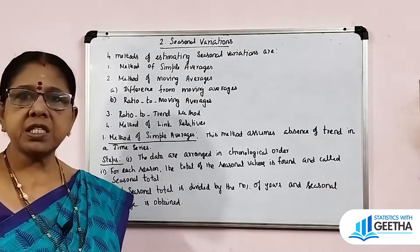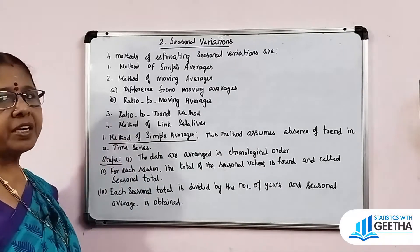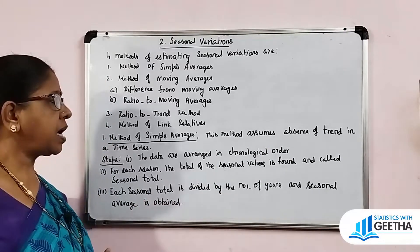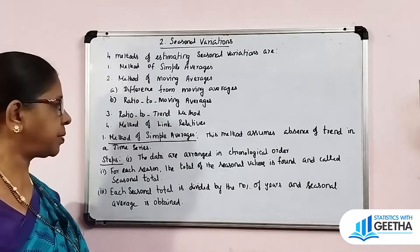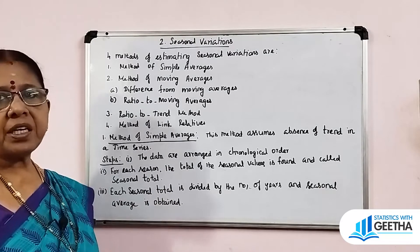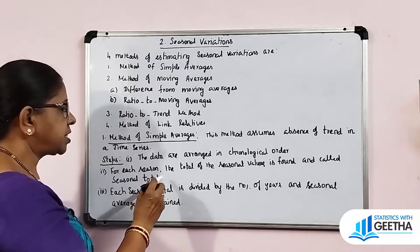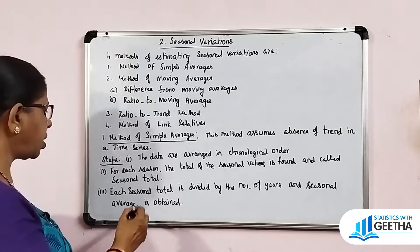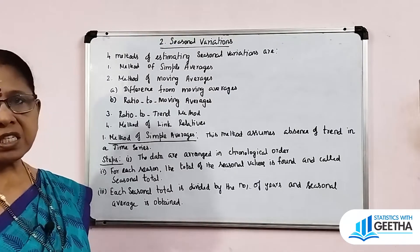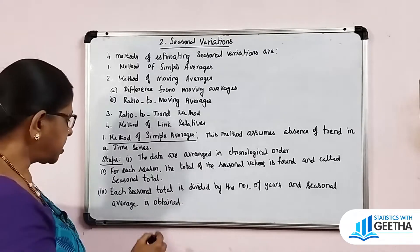The first of these four methods is the method of simple averages. This method assumes absence of trend in the time series. The steps are as follows: first, the data are arranged in chronological order, year-wise. Second, for each season, the total of the seasonal values is found and called the seasonal total.